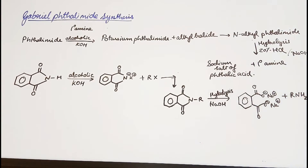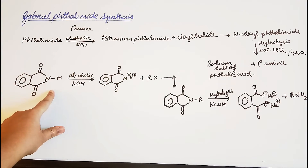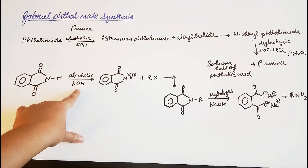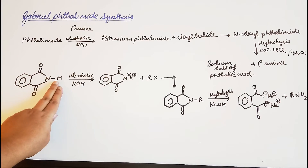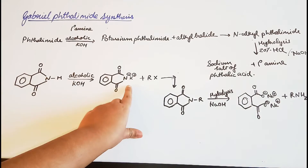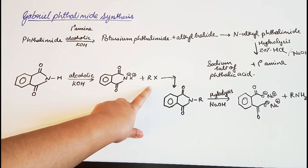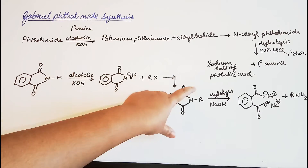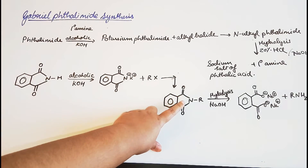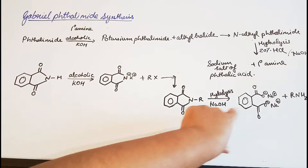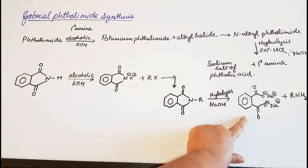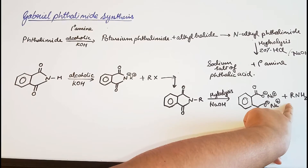To recap the full reaction: we take phthalimide and react it with alcoholic KOH — the H on nitrogen is replaced by potassium, giving potassium phthalimide with N⁻ and K⁺. This reacts with an alkyl halide to give N-alkyl phthalimide, which on hydrolysis with sodium hydroxide gives the sodium salt of phthalic acid and a primary amine.